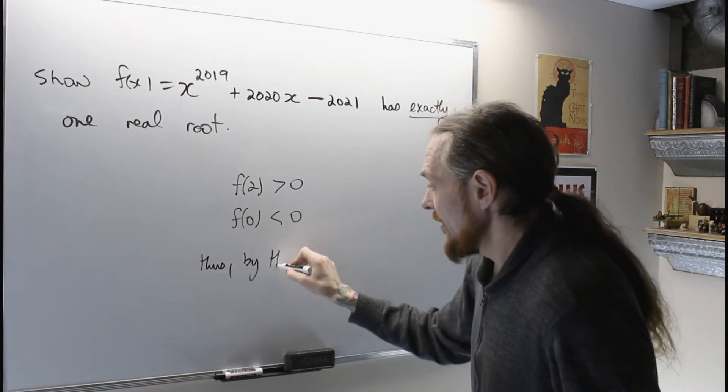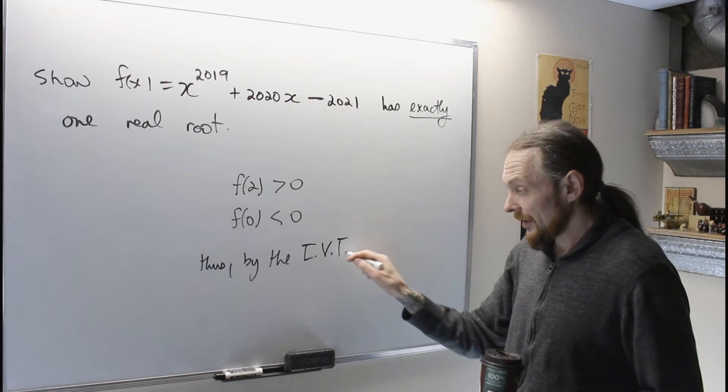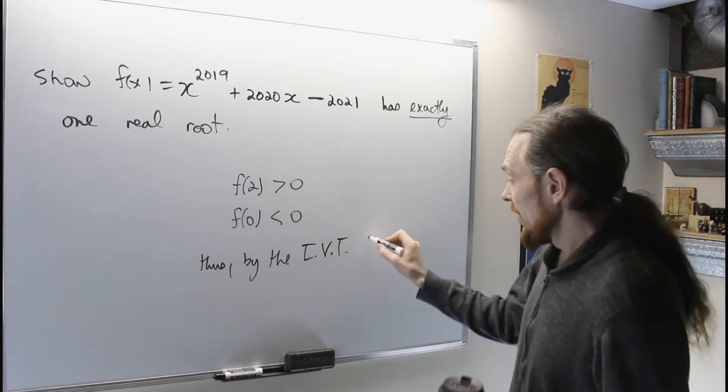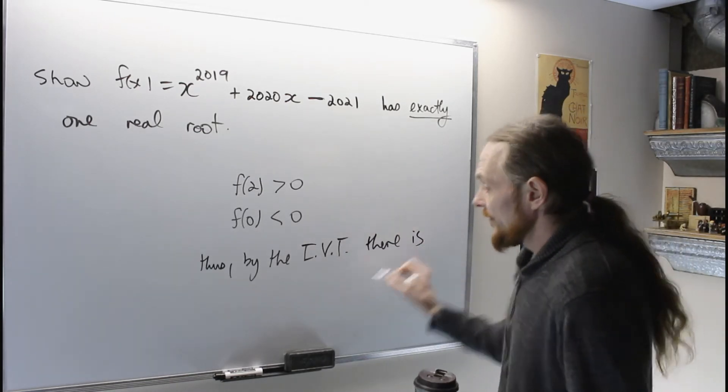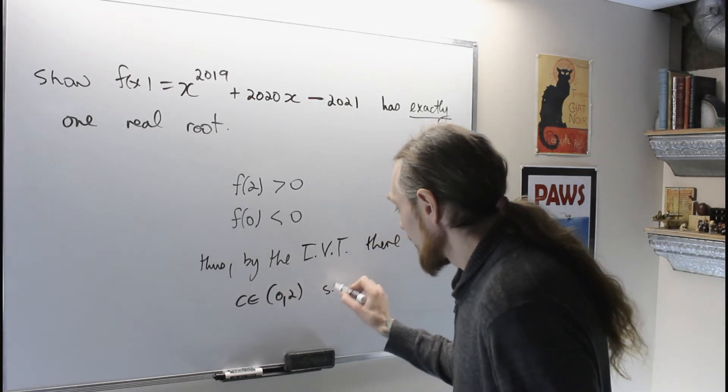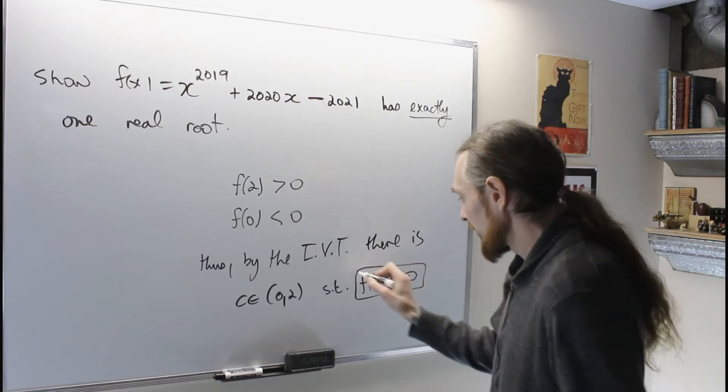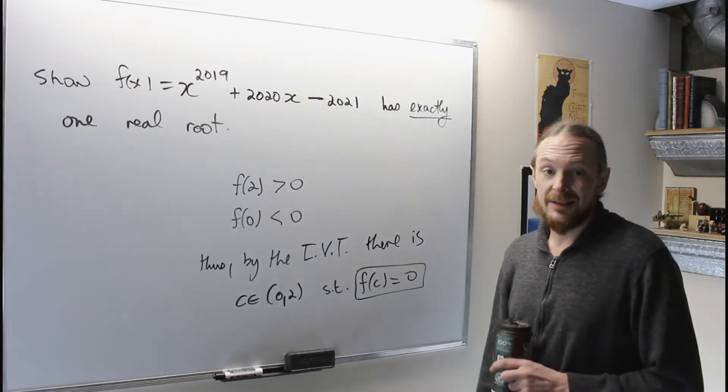by the intermediate value theorem, you have to tell us what you're using to conclude this, there is a c inside 0, 2, such that f of c is 0, or we have a root. So there is at least one c, c is 1.